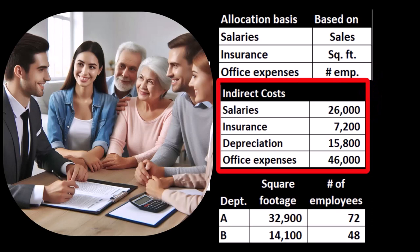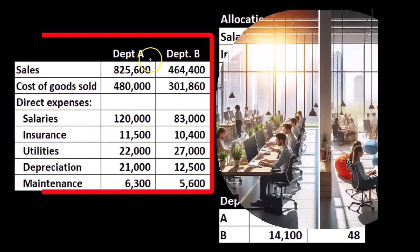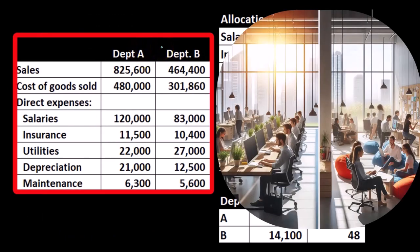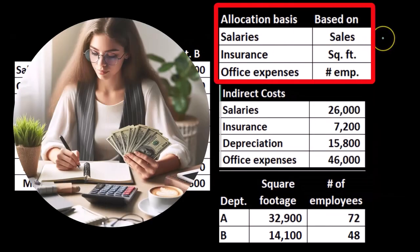These are the indirect expenses we're going to apply out. We have salaries of twenty-six thousand — again, indirect expense. Remember what that means: there are multiple departments that these salaried individuals work for, and therefore we have to take their salaries, their expense, the cost of them for the company, and apply them out to the departments they work in. It's not a direct salary; we can't apply it directly to department A or B in this case, but we're going to have to find some method to do so. We're going to use sales as a basis.